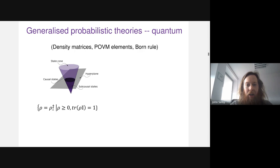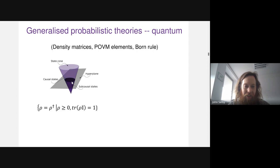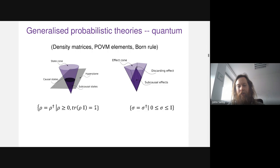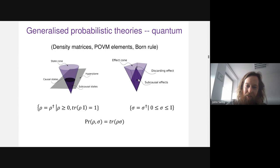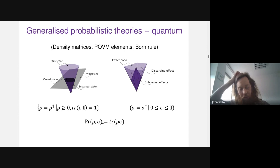Geometrically, the real vector space for quantum states is the space of self-adjoint operators, and the cone is the cone of positive semi-definite matrices. The hyperplane is given by the condition trace(rho) = 1, which defines the normalized states; sub-normalized states have trace(rho) < 1. On the effect side we again have the space of self-adjoint operators, with effects lying between zero and the unit effect, and the probability rule is given by the trace inner product.